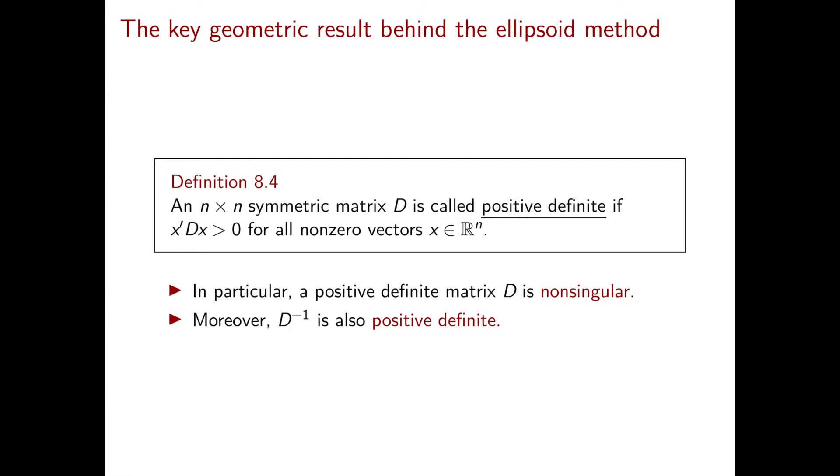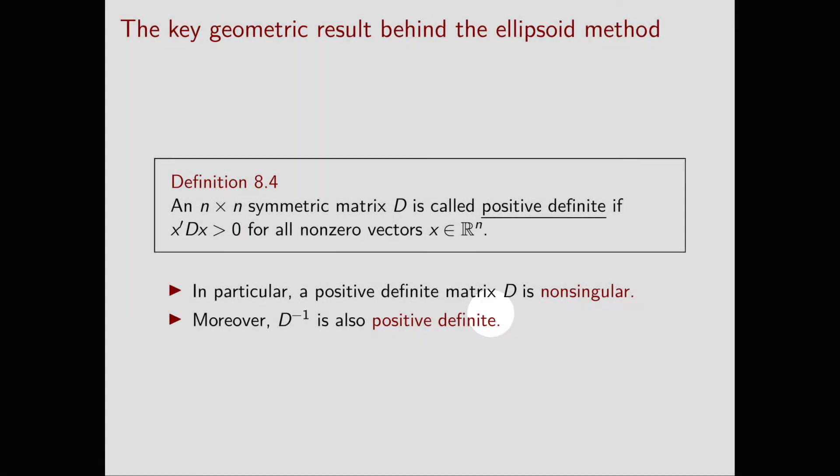From the definition of positive definite, we immediately obtain that the positive definite matrix D is non-singular, therefore we can consider its inverse, which you can show is positive definite as well.